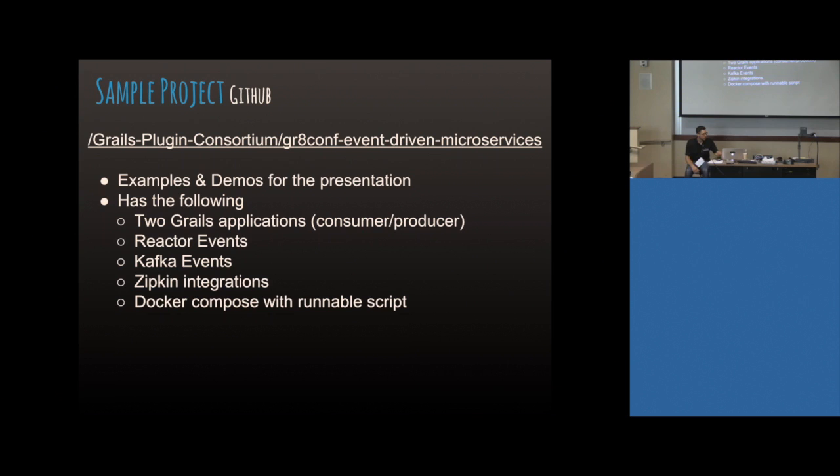This sample application has a couple of different things in it — we'll actually get into code and look at it. There are two projects: a consumer and a producer that will do distributed eventing. The producer also does internal eventing, so there are examples of both internal eventing and external eventing in there. Spring Cloud also has the Spring Streams library — anybody familiar with Cloud Streams?